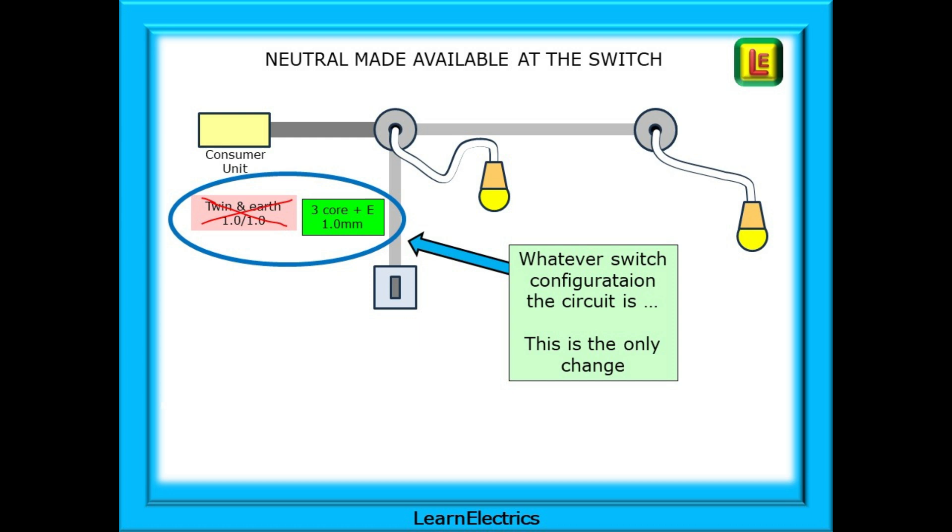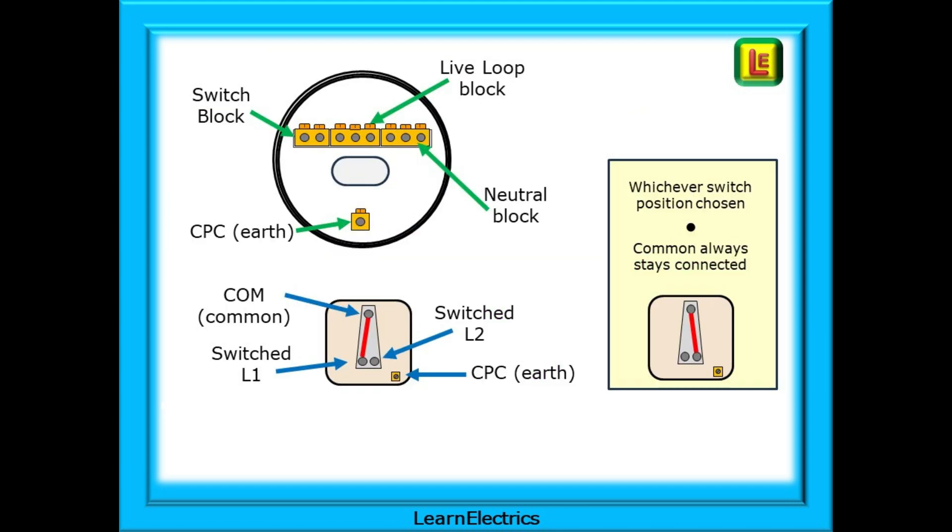And this is the only change. As the next slides show, when you need a neutral, it's sat there waiting for you. And if you don't need it, it just sits there anyway. Just to remind ourselves on three plate ceiling roses and two-way lighting switches, the live loop or line in is always the central block of three terminal holes. The outside block of three is the neutral block and the outside block of just two terminal holes is the switch block, plus an earth terminal as well.